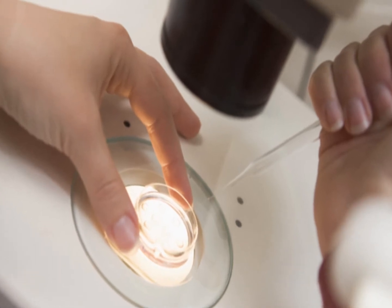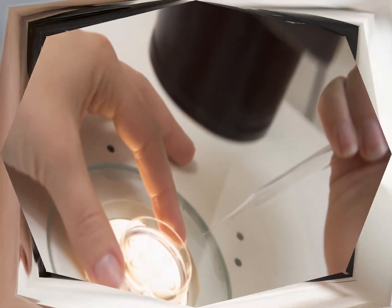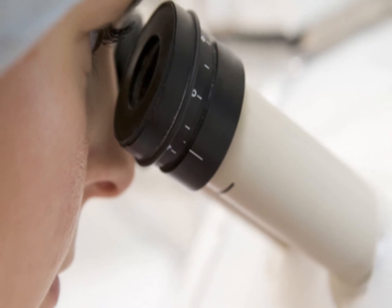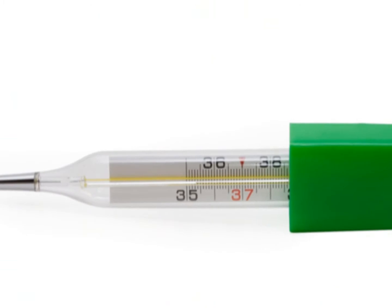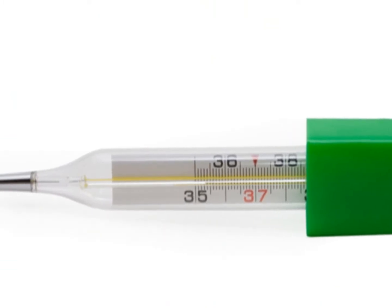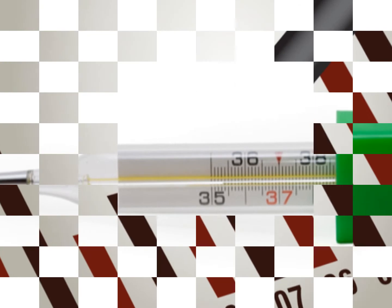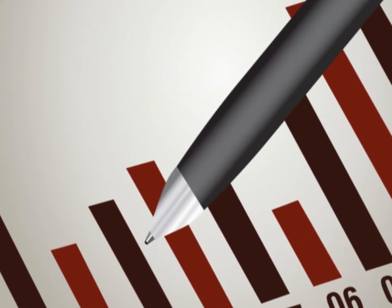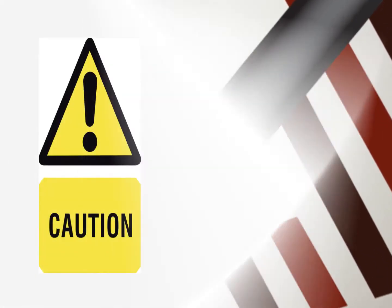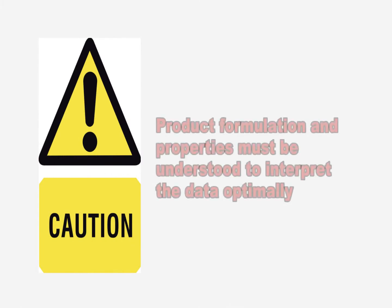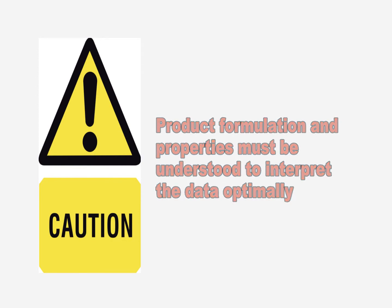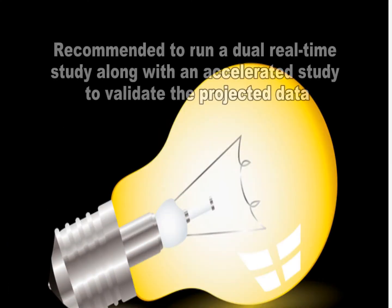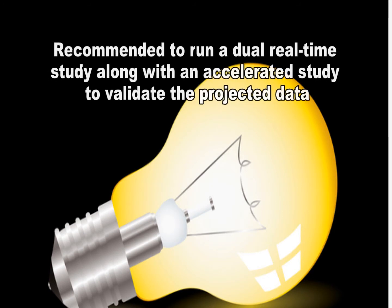Accelerated shelf life studies attempt to predict the shelf life of a product without running a full-length storage trial. This type of study is usually used for a product with a longer shelf life. Acceleration factors such as temperature are applied to the product to attempt to increase the rate of deterioration. The data can be used in predictive mathematical models to project spoilage rates and bacterial growth. Accelerated studies should be used with caution, as one must know a good deal about the specific product formulation and properties to interpret the data optimally. It is always recommended that when an accelerated study is selected, a dual real-time study is also run concurrently to validate the projected data.